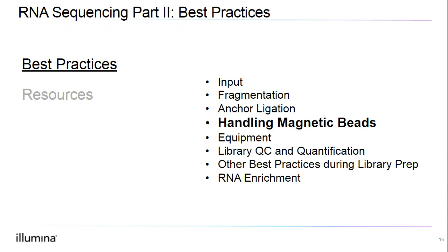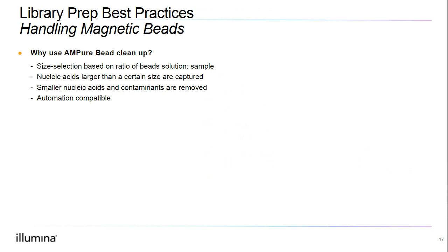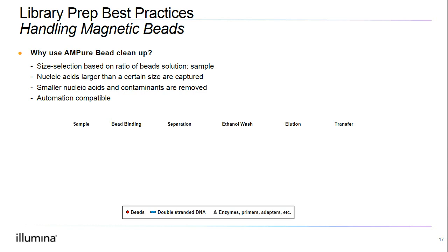Now let's go over best practices for handling magnetic beads. We typically use Ampure bead cleanup at the end of the reaction to allow size selection. Based on the ratio of bead solution to sample, we can select fragment sizes to retain for the next step. With a bead cleanup, the larger nucleic acids are preferentially maintained and we remove the smaller nucleic acids and other contaminants. You can find resources on how this process works by searching for how Ampure Beads work. The benefit of using Ampure Beads is that we retain more of our sample than with gel purification, and these beads are also automation compatible.